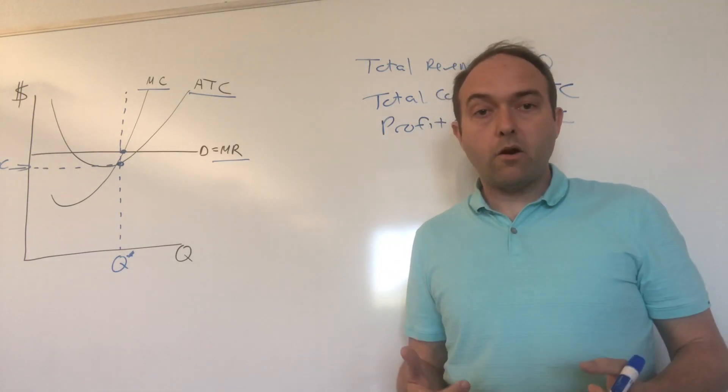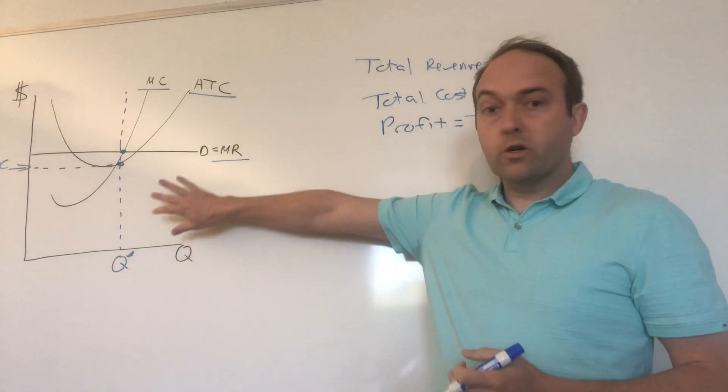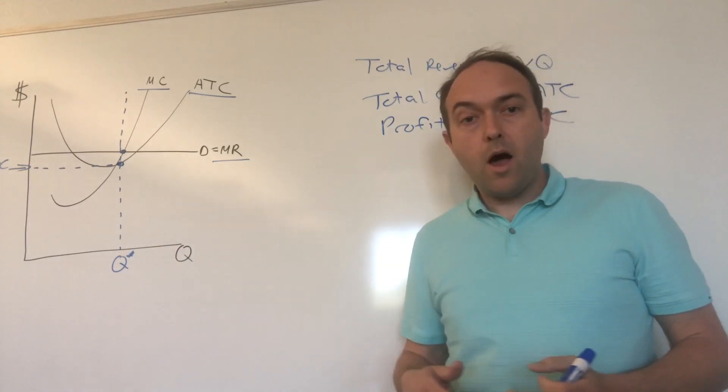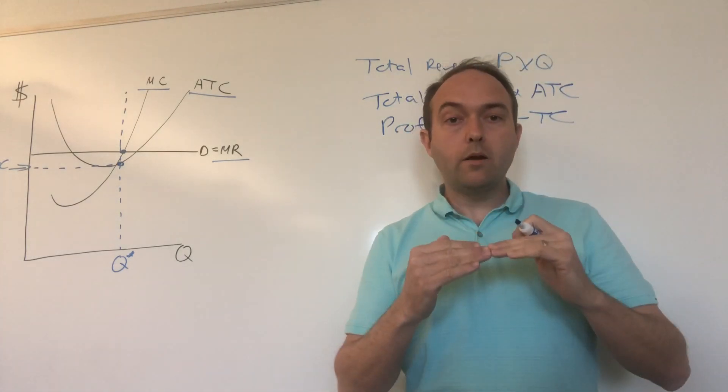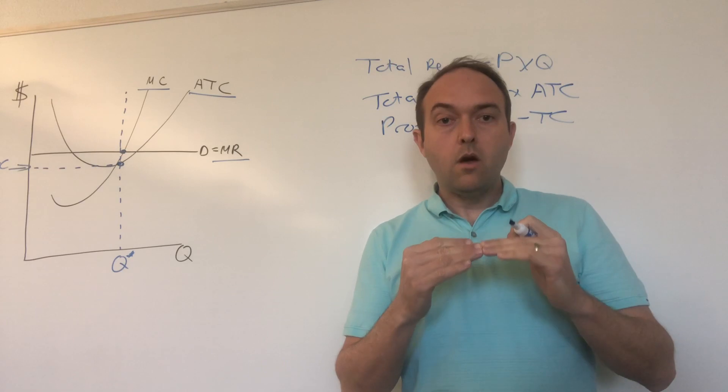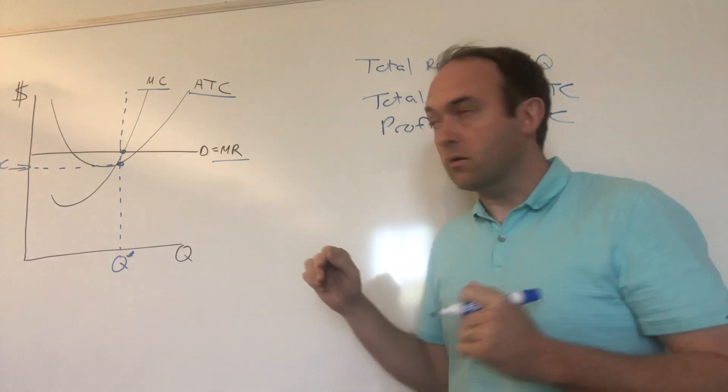Alternatively, you can measure the area of what's called a profit box. Profit box, you're going to get from your chart. And the box is going to have the top being the price, the bottom being the ATC, one side being the Y axis, and the other side being Q star. So let's find that here.